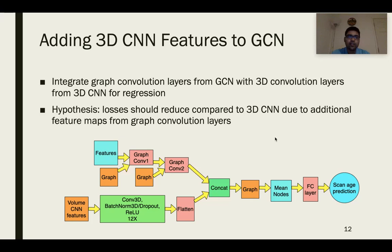Lastly, we integrate graph convolutional layers from GCN with 3D convolutional layers from 3D-CNN for scan age regression. We hypothesize that the losses should be lower than the benchmark 3D-CNN due to the additional rich features extracted by the graph convolutional layers from the surface. In this architecture diagram, you can see the resulting architecture with a graph convolutional network pathway and a 3D-CNN pathway with 3D convolutional layers, batch norm, and ReLU.